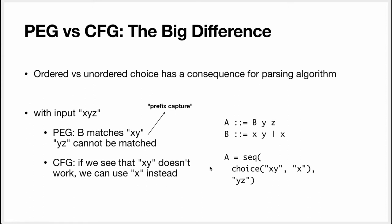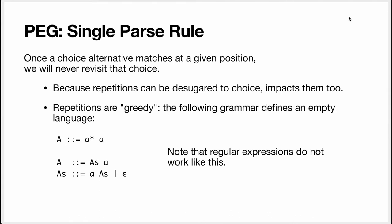In CFG, on the other hand, if 'xy' doesn't work, we can pick 'x'. I can't give you the mechanics right now because it depends on the algorithm, but in CFG this would have worked. This property of PEG — where it only picks the first choice — I've called that the single-parse rule. Since repetitions can be desugared to choices, it also impacts them, making them greedy. If you take this grammar, the language it defines is empty — it will never match anything. This will consume all the A's and there will not be any A left. Note that regular expressions do not suffer from this problem, even though they use the same notation — regular expressions work much like context-free grammars.